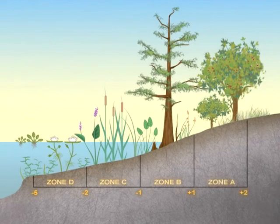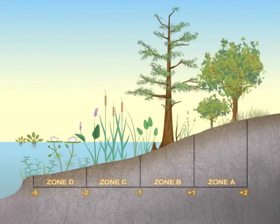Zone A is from one foot above the normal water line to two feet above the normal water line. This is where water-loving trees flourish.